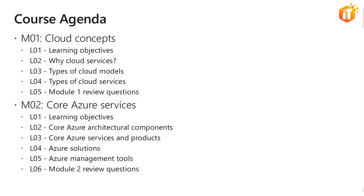Within the course agenda, when we discuss cloud concepts, we will define and describe the benefits and considerations of using cloud services. We will understand terms such as high availability, elasticity, agility, fault tolerance and disaster recovery. We will understand the principles of economies of scale, the difference between capital expenditure and operational expenditure, consumption-based models, and the difference between IaaS, PaaS and SaaS cloud models. We will also describe the difference between public, private and hybrid cloud models.